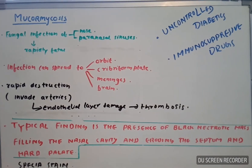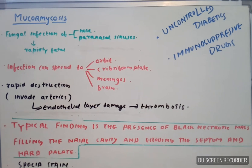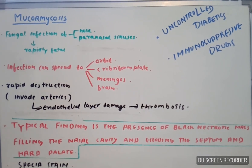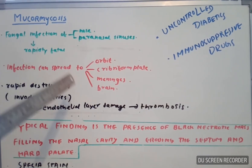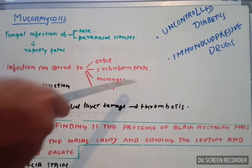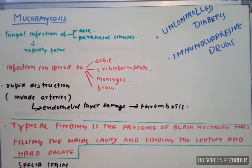Talking about mucormycosis — it is a fungal infection of the nose and paranasal sinuses, and it is rapidly fatal. The infection can spread to the orbit, cribriform plate, meninges, and brain.